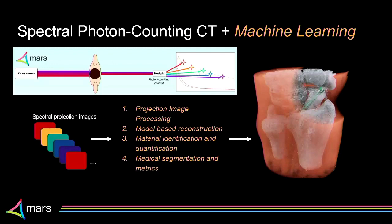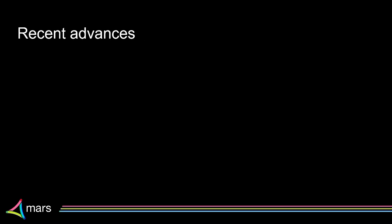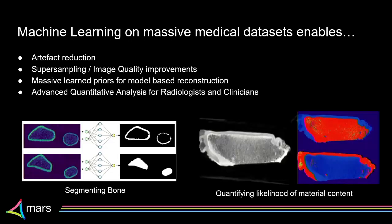Some of those results can be shown. Here we've got results towards the later end of the pipeline with artifact reduction and super-sampling image quality improvements. What that means is we can go to fine detail and segment bone in an image, or provide a likelihood that a particular material is present in a part of the body.